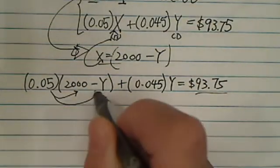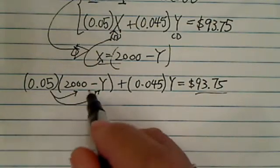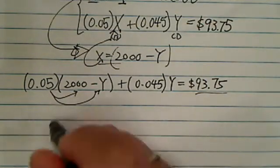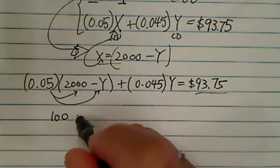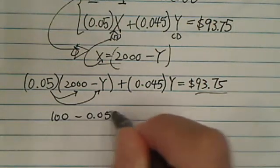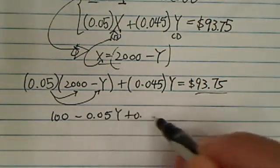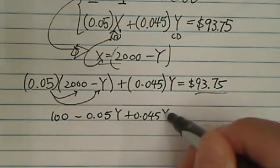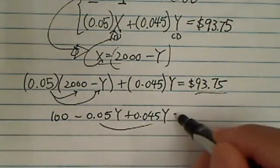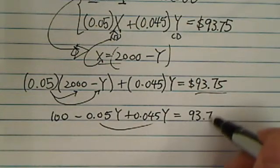All right, so what we're going to do is we're going to distribute it in there. 0.05 times 2,000, if you punch on your calculator, you'll see that's equal to 100 minus 0.05y plus 0.045y. Of course, we're going to combine those two. That's together equal to $93.75.